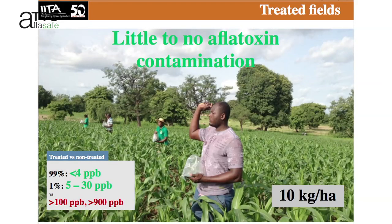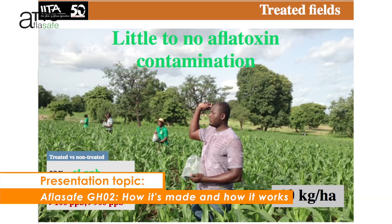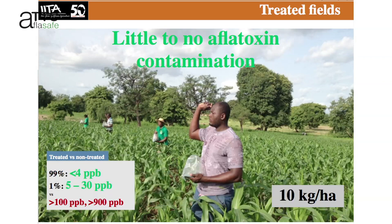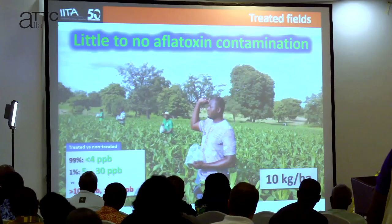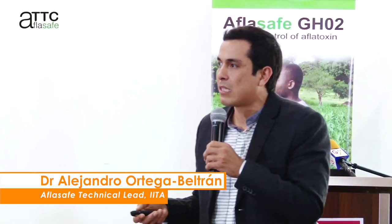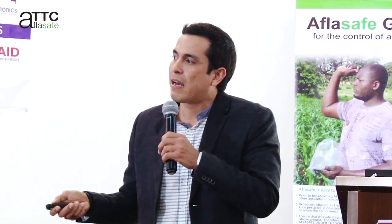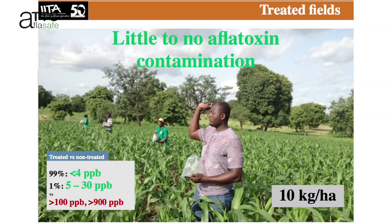A farmer is applying Aflasafe during these efficacy trials. This simple intervention results in little to no aflatoxin contamination. Over 99% of the maize and groundnut contains less than 4 parts per billion, which is below the EU regulatory limit. A little bit contains 5 to 30 parts per billion, but this is far better than crops with over 100 or even over 900 parts per billion.